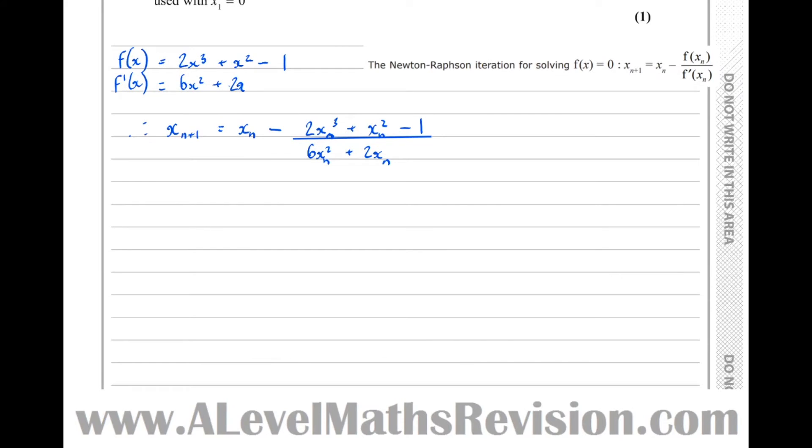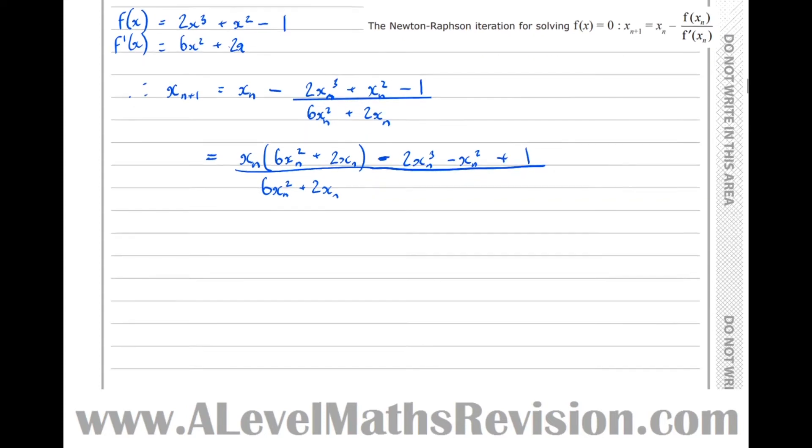So let's give the first term the same denominator as the second term. Equals xn times the denominator of the other one over itself, so times 6xn squared plus 2xn over 6xn squared plus 2xn. Then we're going to take all of the numerator here, so take 2xn cubed, take xn squared, take 1.